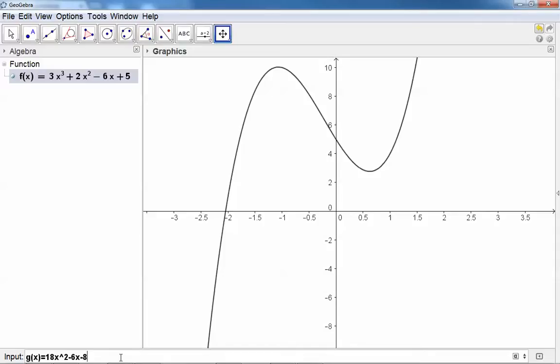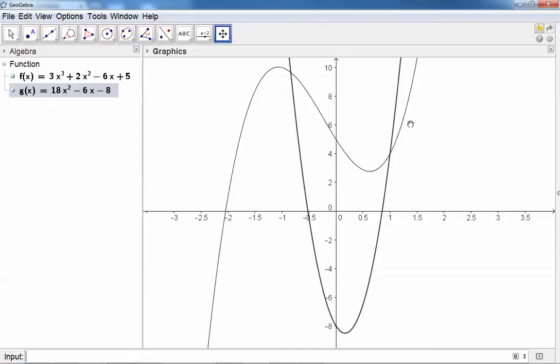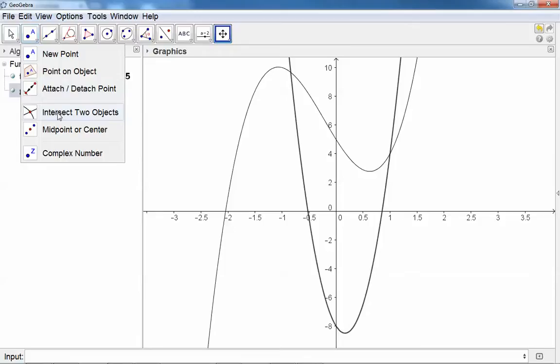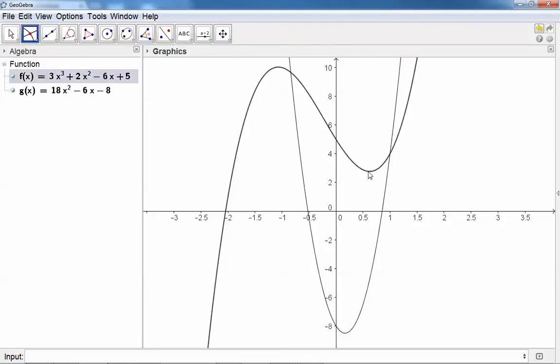minus 8. Now to find this area, we first need the two points of intersection. So you can ask GeoGebra to find the points of intersection of this graph and this graph.